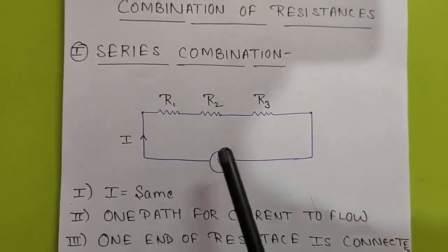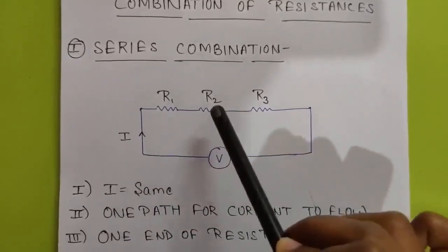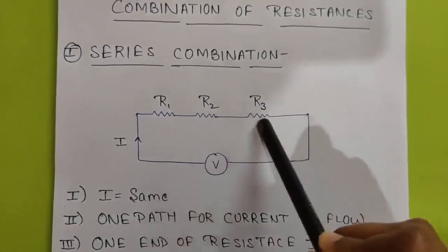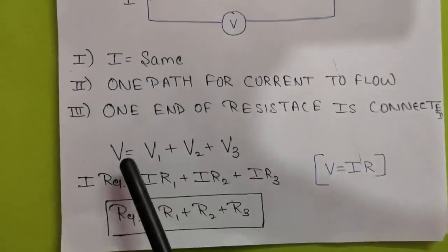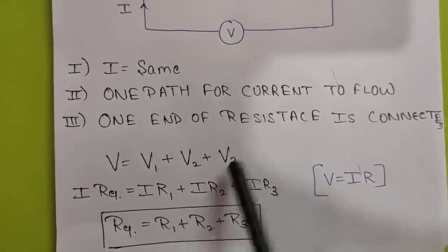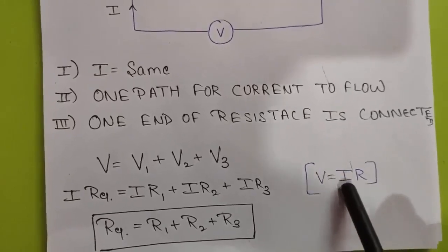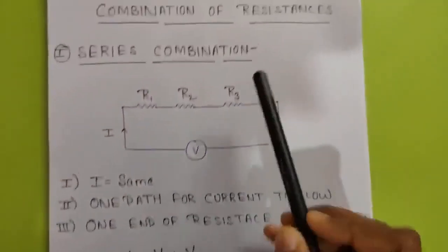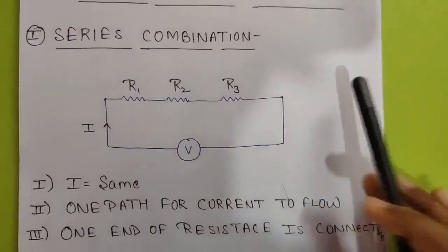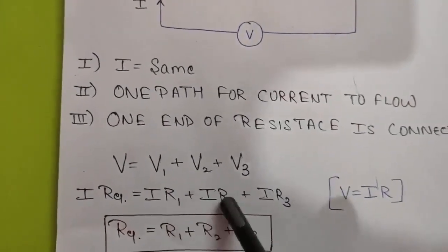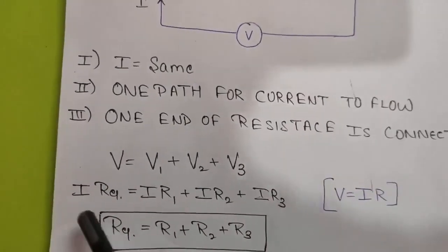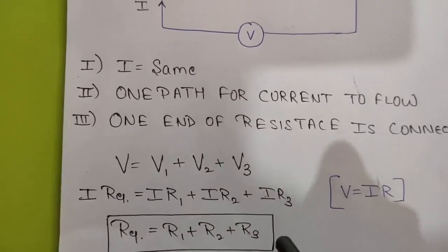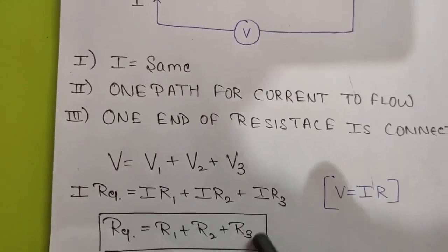Since current remains the same, let us suppose the voltage on R1 is V1, voltage drop across R2 is V2, and voltage drop across R3 is V3. Total voltage V will be equal to V1 plus V2 plus V3. From Ohm's law, V equals IR, where V is voltage drop, I is current, and R is resistance. So we write V as I times R_equivalent. Then V1 equals IR1, V2 equals IR2, V3 equals IR3. Substituting and cancelling I, we get R_equivalent equals R1 plus R2 plus R3. This is the equivalent resistance in series — it is simply the addition of the resistances.